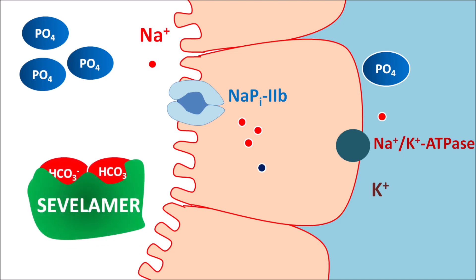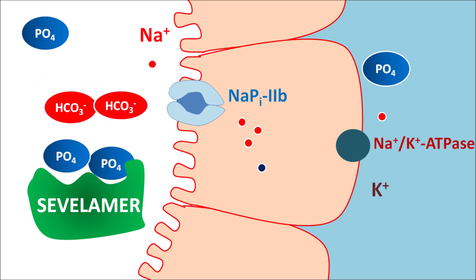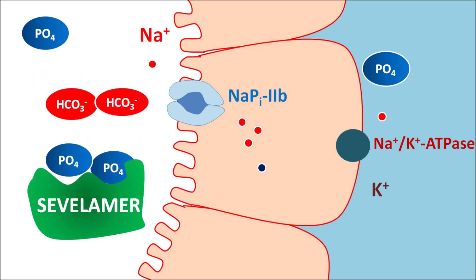Sevelamer does not block the sodium-phosphate transporter. Instead, it acts as an ion exchange resin bearing a bicarbonate moiety. The bicarbonate can be easily removed and phosphate anions attach to the sevelamer resin, which is non-absorbable. Phosphate anions are exchanged for bicarbonate and become bound to the resin, thereby reducing the absorption of phosphate anions from the intestine.